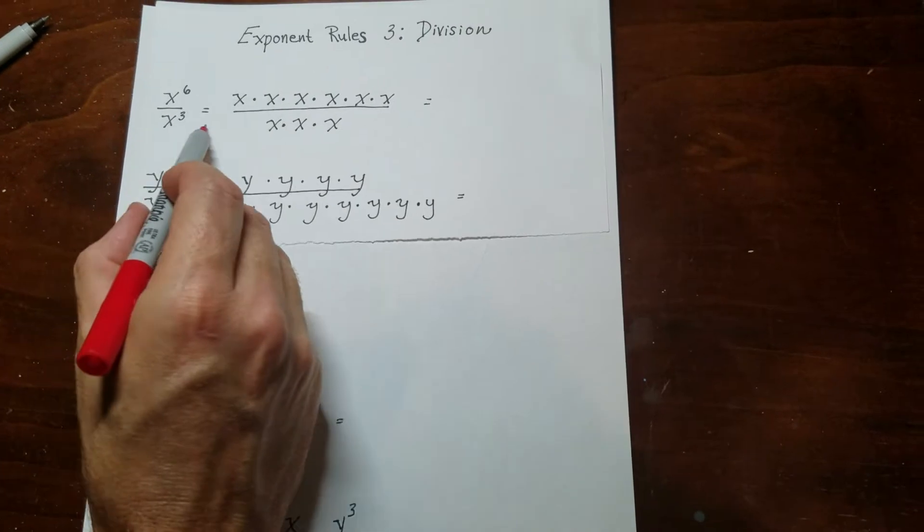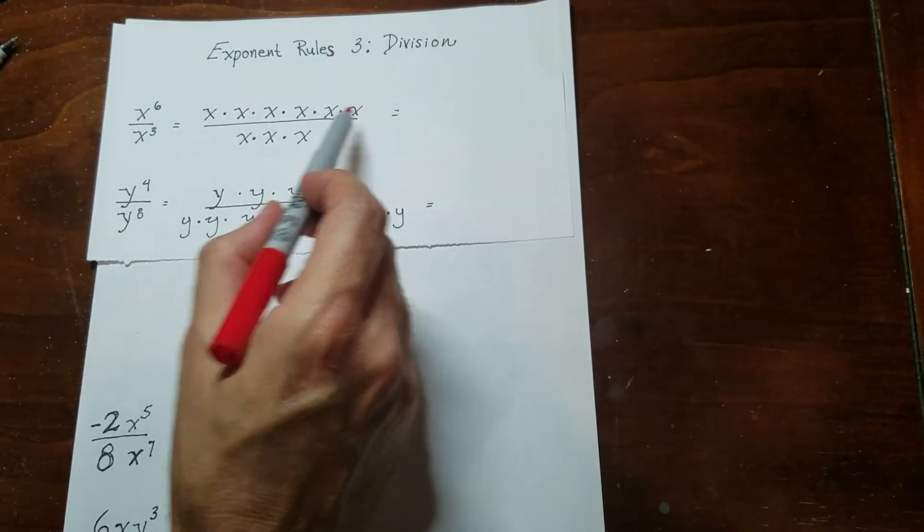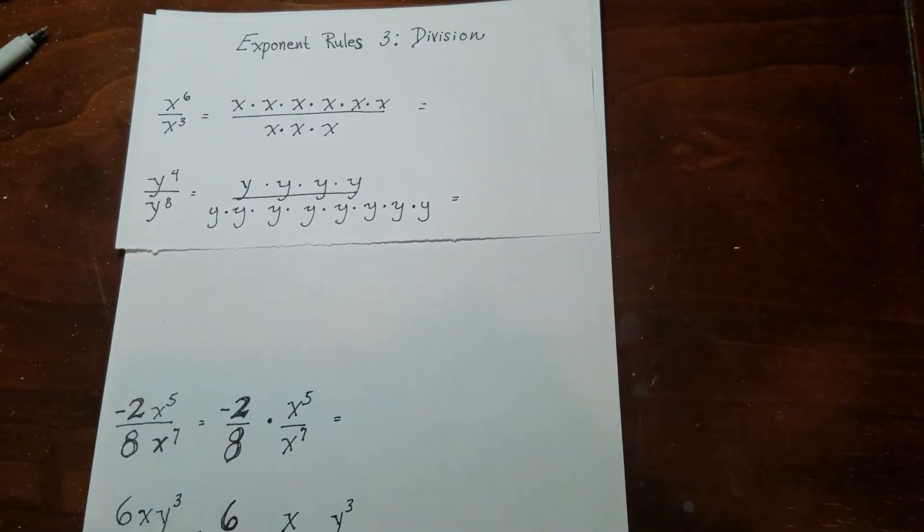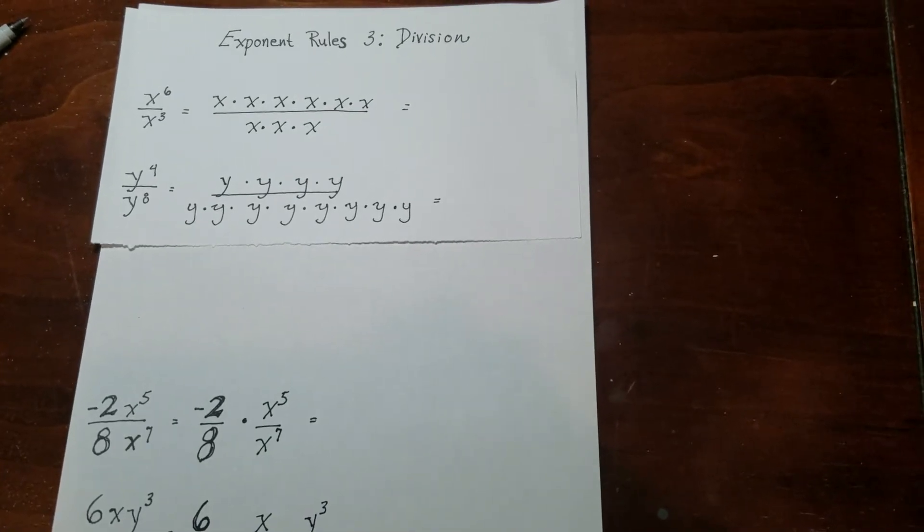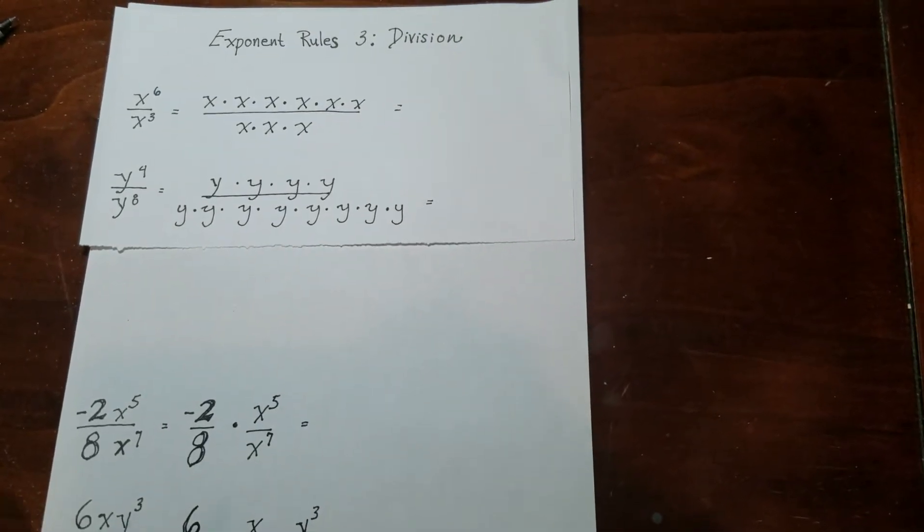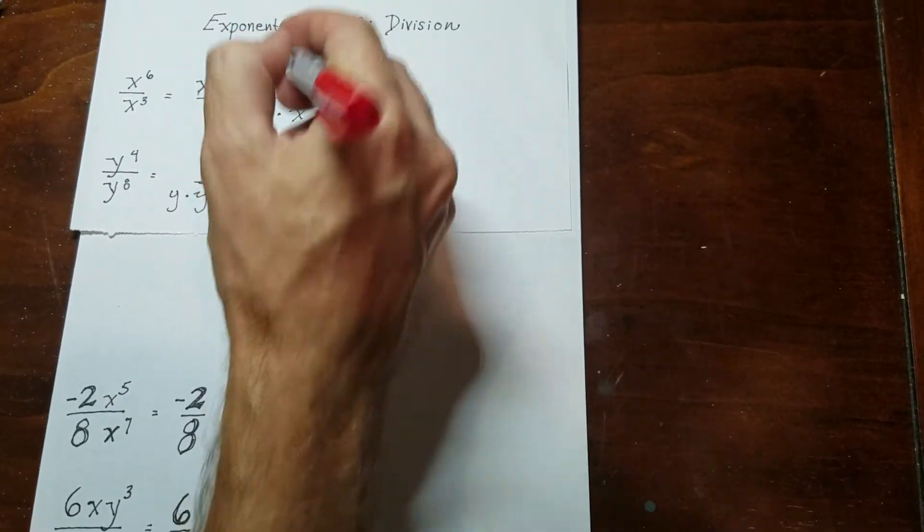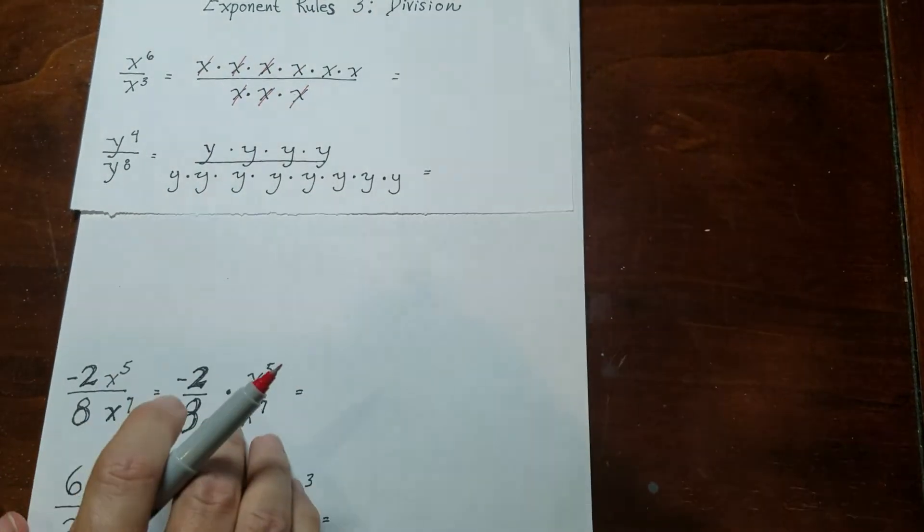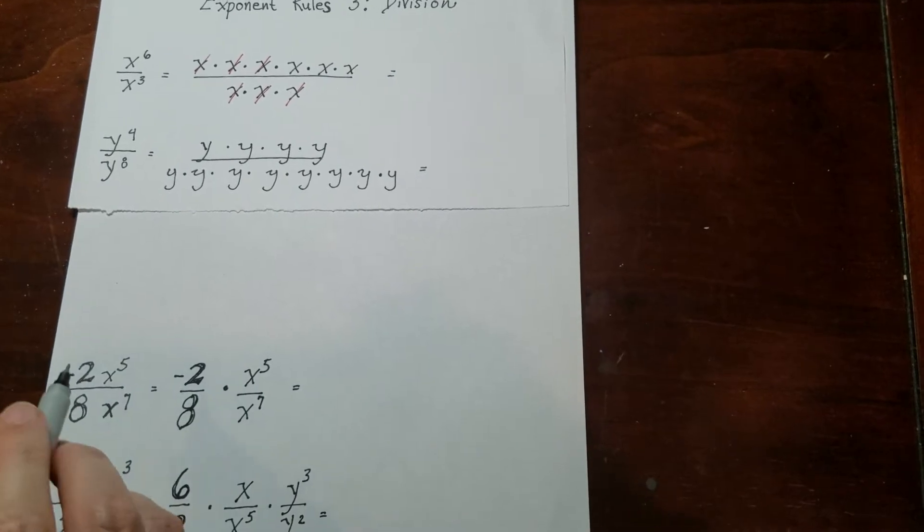So you can see all I did was over here, I just rewrote it. So it says x to the 6, so there they are. There's 6 x's, and then over here there's 3 x's. Now, whenever the numerator and the denominator are the same thing, then it means that it's equal to 1. So what I can do is cancel out all of the 1s. So if I do x over x, x over x again, and x over x again, then you could see what happens here is that I have 3 x's left over on the top.